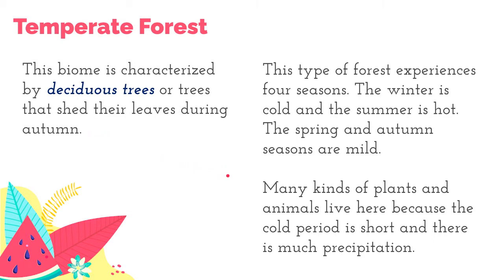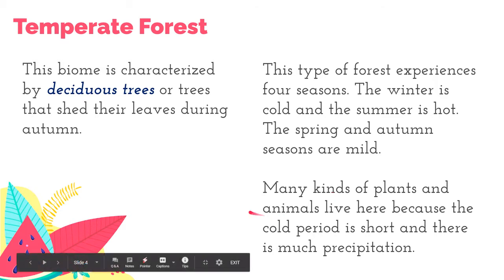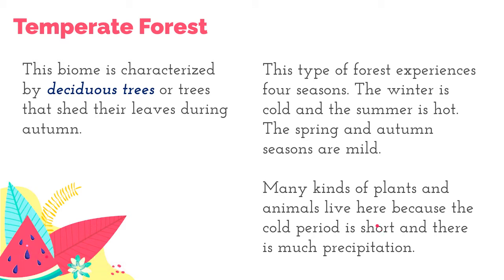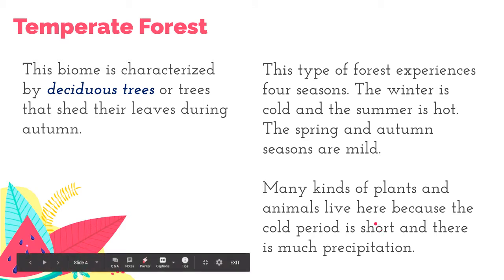Many kinds of plants and animals live in this kind of forest because, compared to tundra and taiga, the cold period is relatively short, and compared to deserts, there is more precipitation.